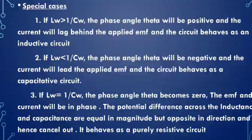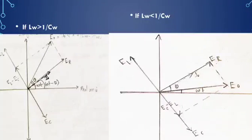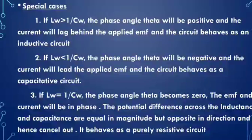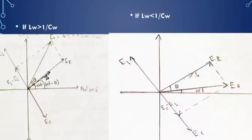There are three special cases. First, if ωL > 1/ωC, then (ωL − 1/ωC) is positive, so the phase angle θ is positive, the current lags behind the applied EMF, and the circuit behaves as an inductive circuit. Second, if ωL < 1/ωC, then (ωL − 1/ωC) is negative, θ is negative, the current leads the applied EMF, and the circuit behaves as a capacitive circuit.